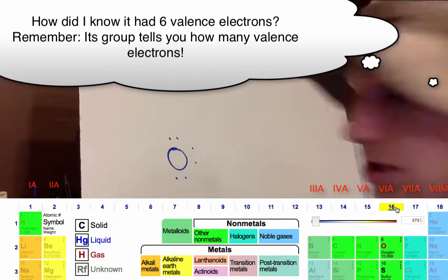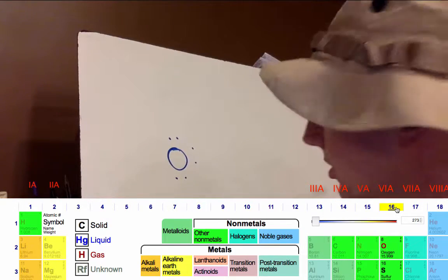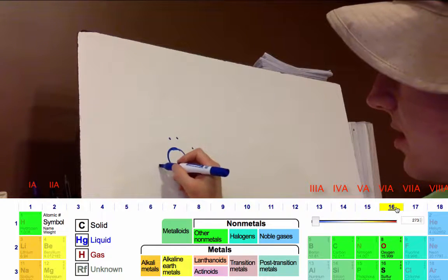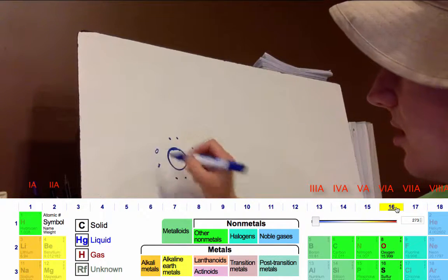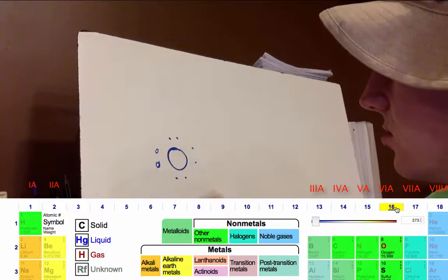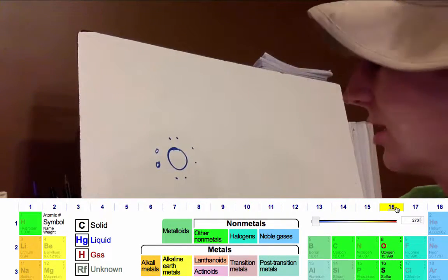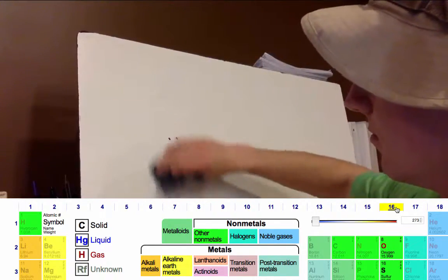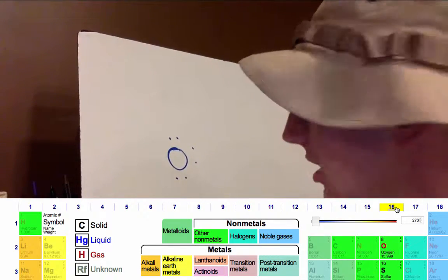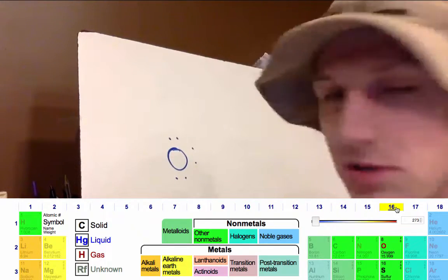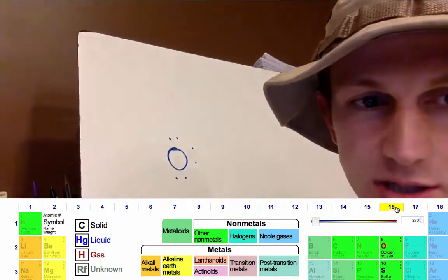Oxygen is not stable right now because it wants a full valence shell. It wants another extra electron here and another electron there — those are the ones not currently there. It only has those six electrons, so it needs to find something else that would want to give up some electrons.